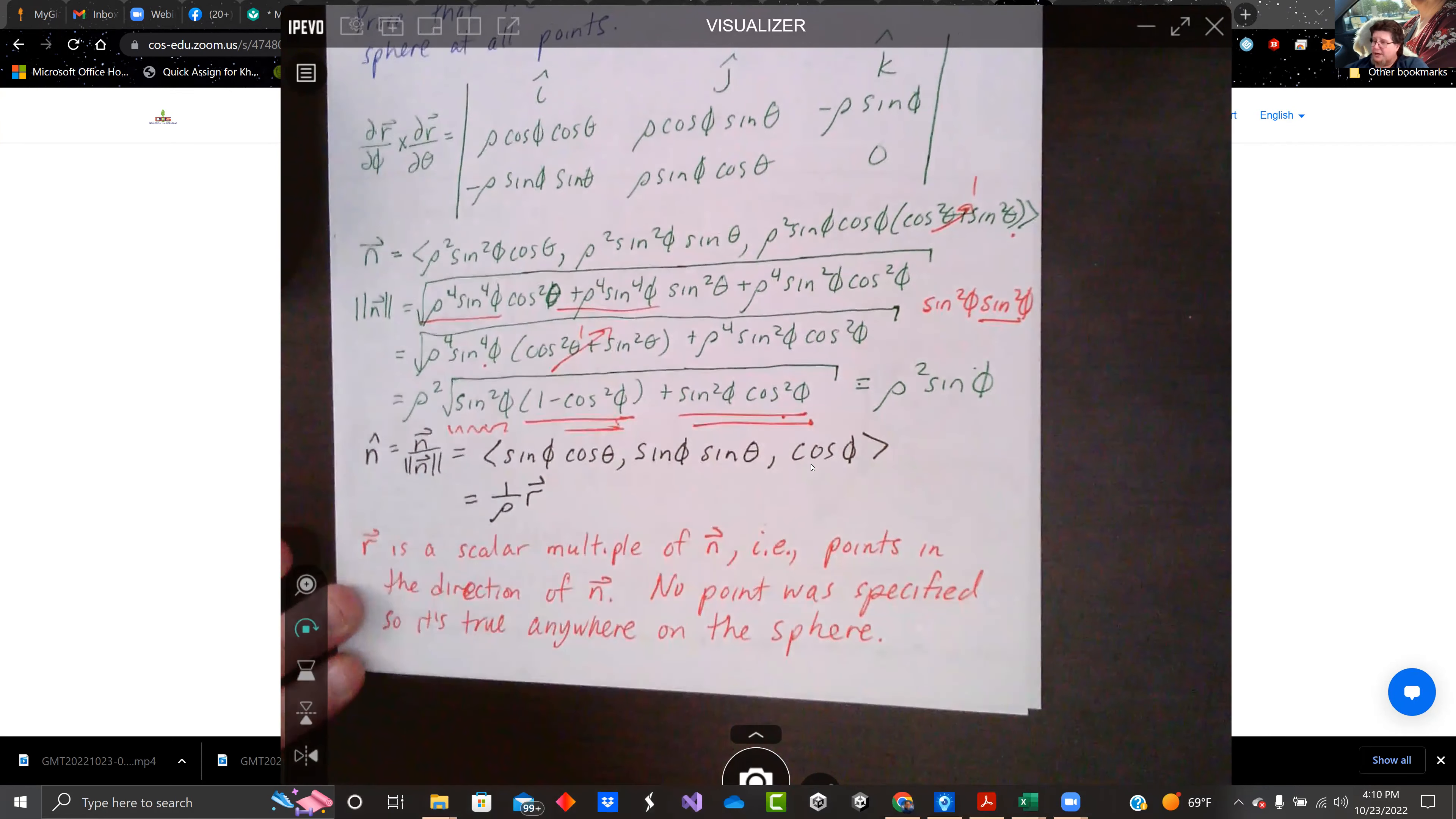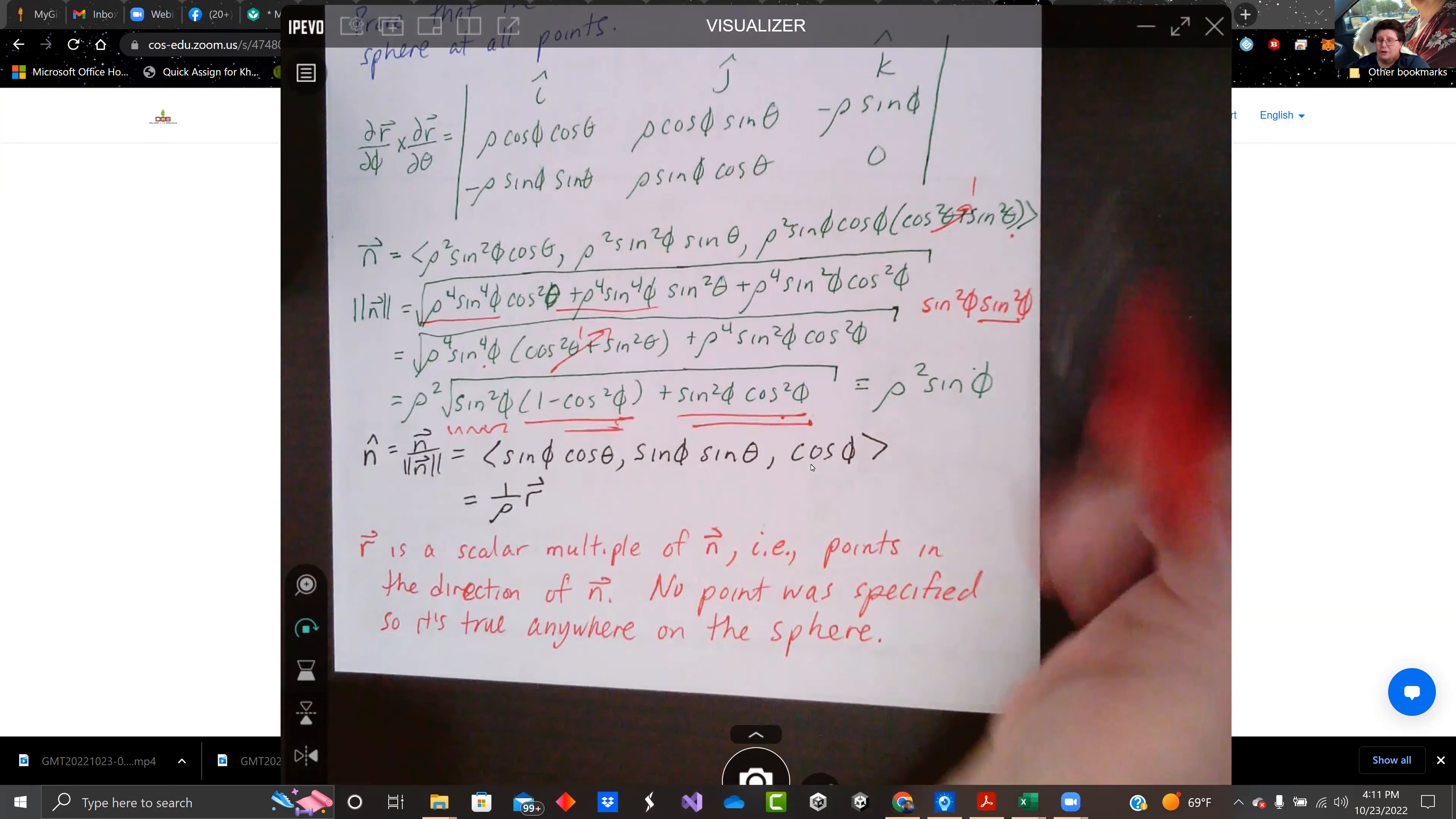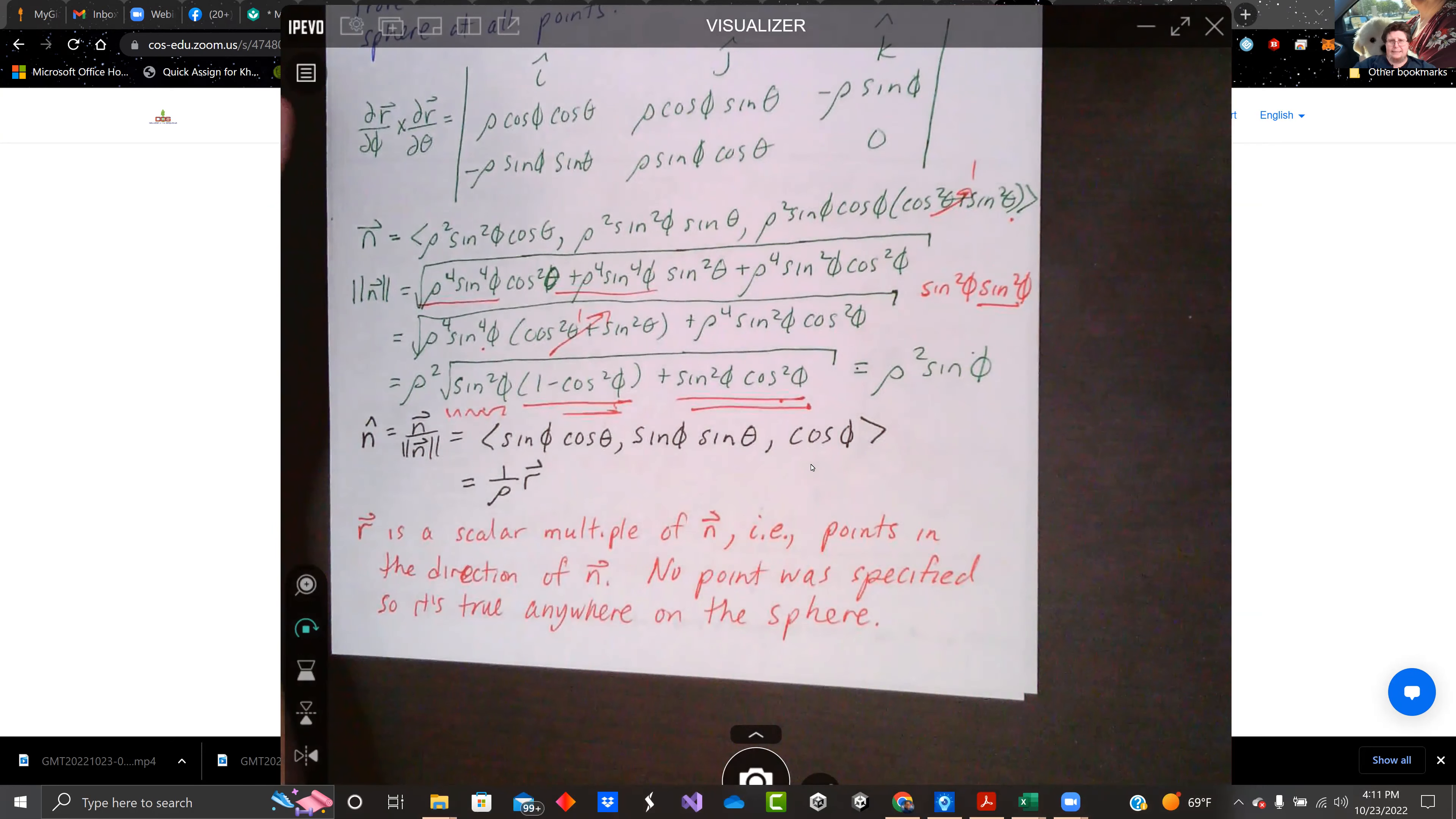The radial vector is pointing from the origin outward towards the surface. That's the radial vector. So R is a scalar multiple of n, or vice versa. So we proved that the radial vector is normal everywhere. That's it for that video. Peace.